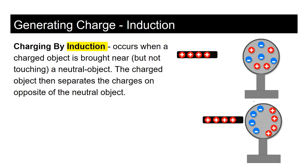Charging by induction occurs when a charged object is brought near — but not touching — a neutral object. The charge on the neutral object separates. We're not changing the total number of electrons or protons on the neutral object, but we're polarizing it — creating an internal electric field inside the object.